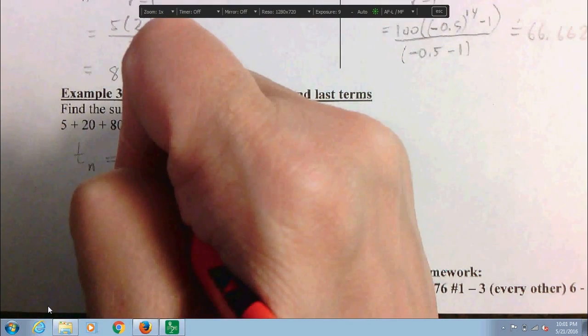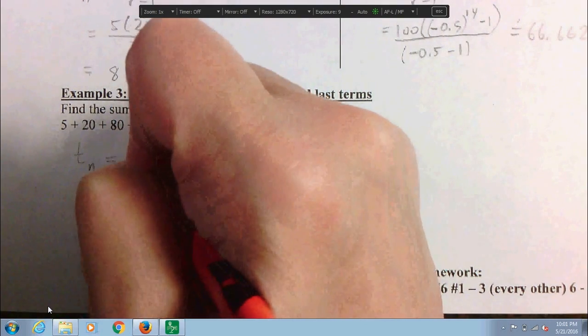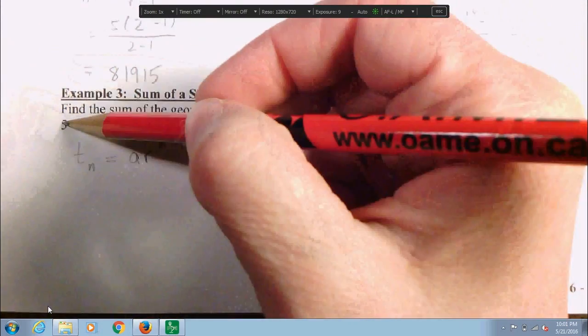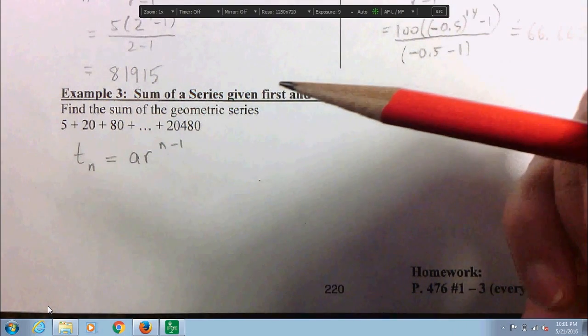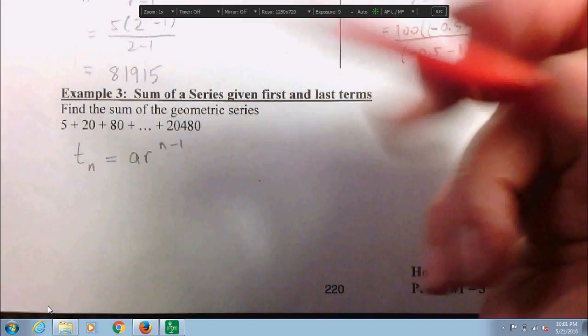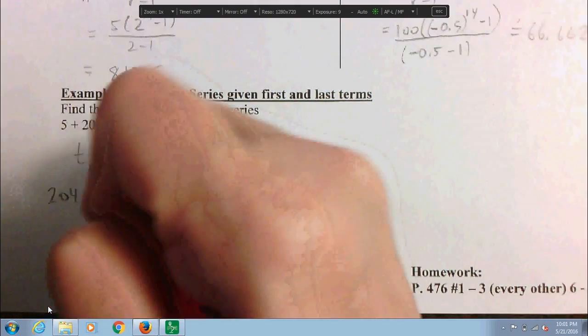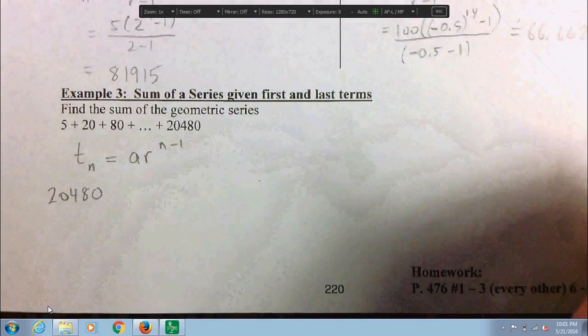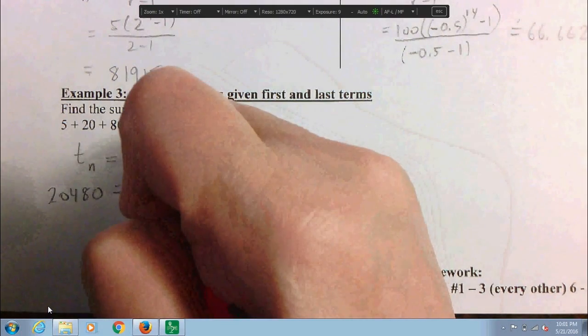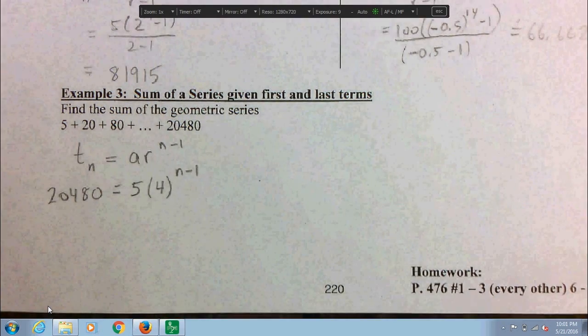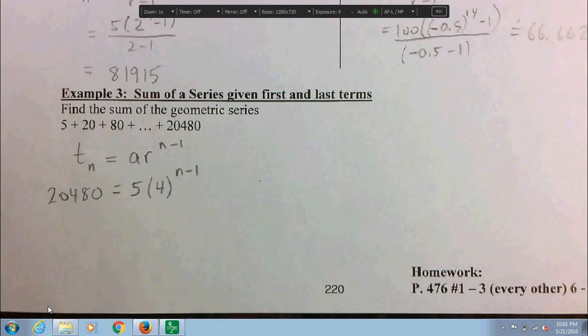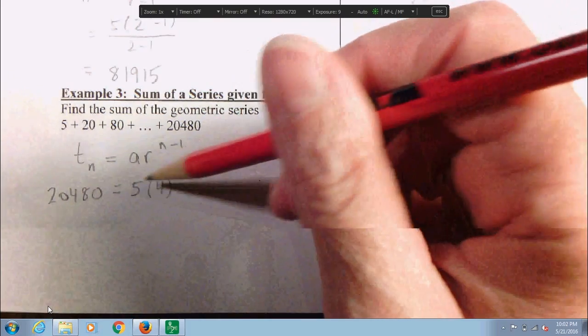For this one over here, we're going to use the general term for geometric sequences: tn equals a times r to the n minus one. We know a, we can figure out r, we don't know n. So we say that this last term we'll call it tn, and now we have to figure out what the n is. So tn goes in, a is 5, r is 4 to the exponent n minus 1.